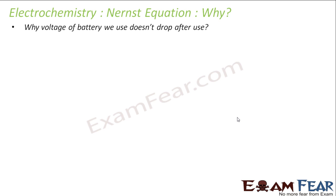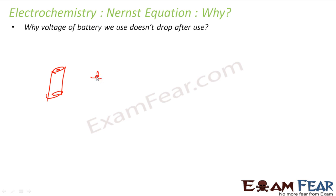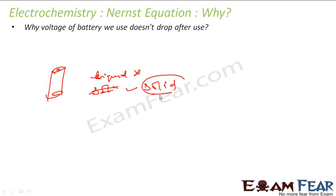The next question is: why does the voltage of the battery we use not drop after use? That's a good question. The battery we generally use — a pencil battery or a lithium-ion battery — does not have the electrolytes in liquid form. They are in almost solid form. So the voltage does drop, but very little because the electrolytes are almost in solid form.